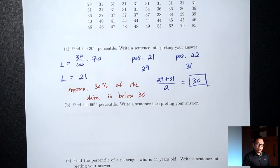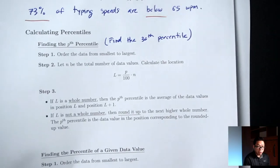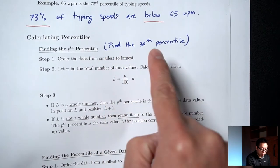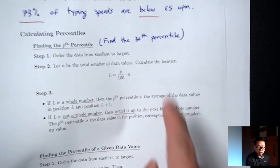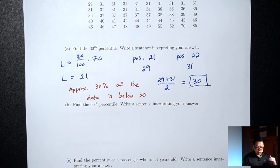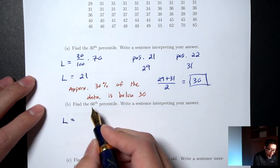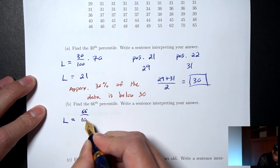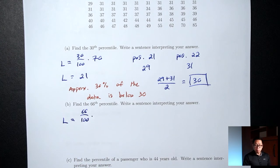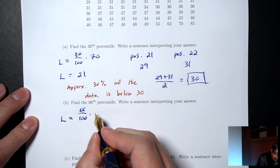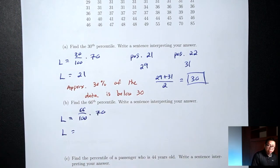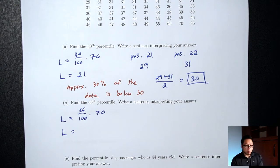Let's try part B: find the 66th percentile. We use the first set of directions. Step one is done. Step two: calculate L. P over 100 times N is 66 over 100 times 70, which gives 46.2.